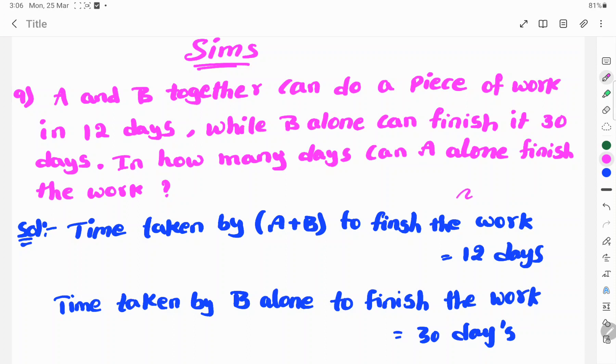A and B together can do a piece of work in 12 days, while B alone can finish it in 30 days. In how many days can A alone finish the work?